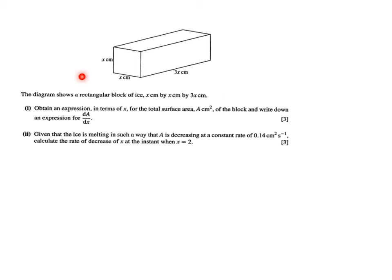Now what's going on? The diagram shows a rectangular block of ice of x by x by 3x centimeters. First of all we have to obtain an expression in terms of x for the total surface area A of the block and write down an expression for the derivative. So first the surface area A, let's do that over here, so A equals...